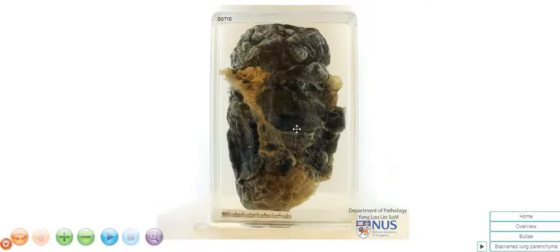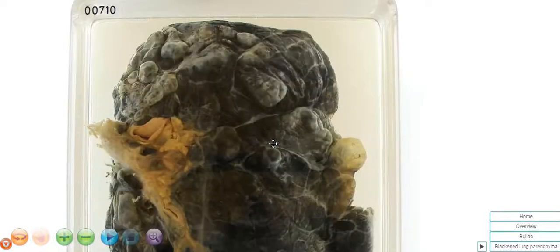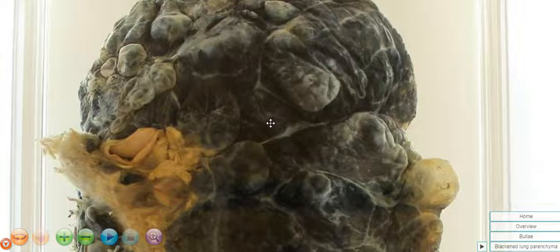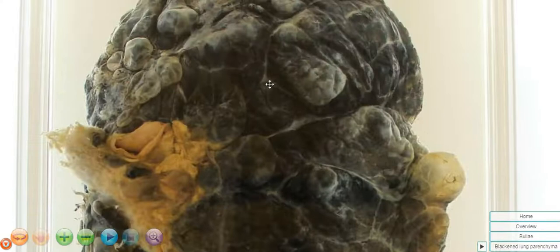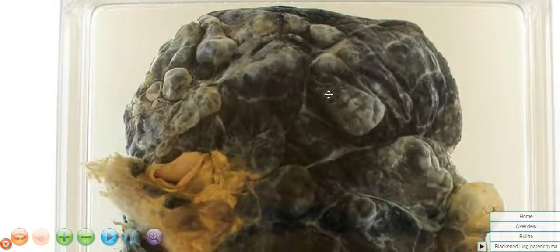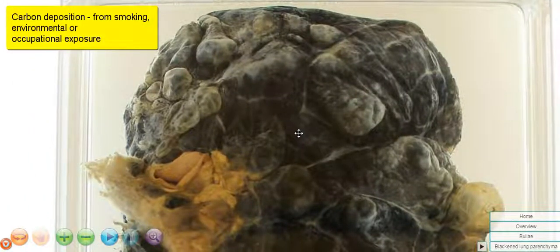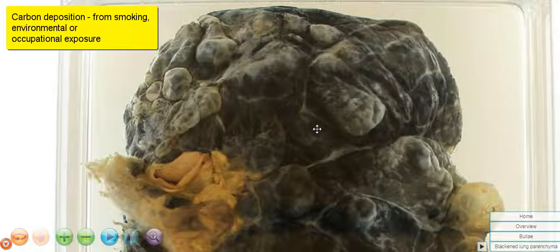Hello, this is a specimen of the lung and we're looking here at the pleural surface. We can see first of all that the lung is actually rather dark in color, it's quite black in many areas, indicating that there is probably carbon deposition in the lung and therefore this potentially may be a smoker.